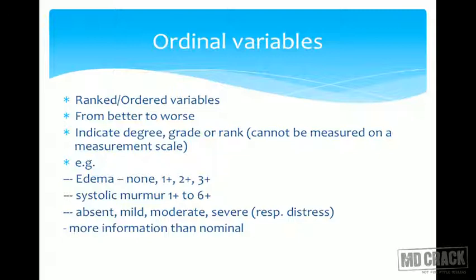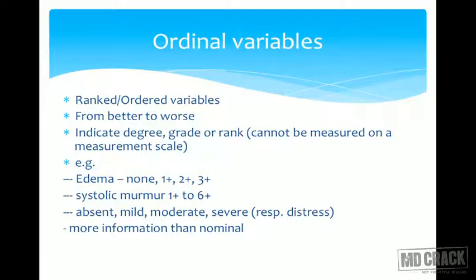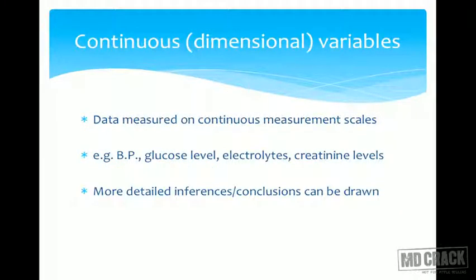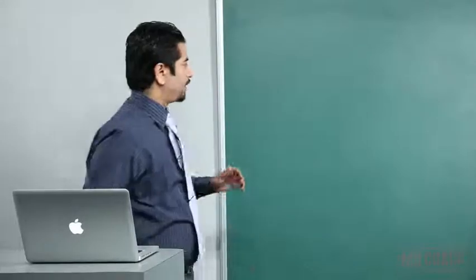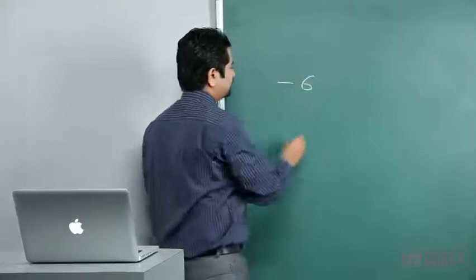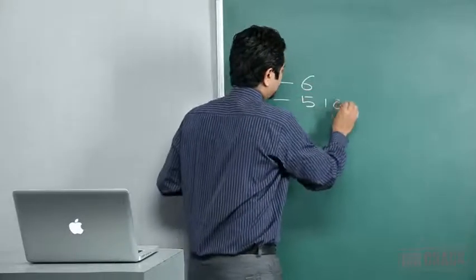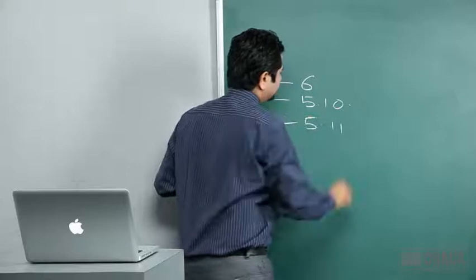Ordinal variables are ranked or ordered. For example, edema graded as none, 1+, 2+, 3+ — meaning edema is increasing. Systolic murmur is graded from grade one to grade six — that is an order. Continuous variables can have multiple values; for example, height can be six feet, five feet ten, five feet eleven, and infinitely many values in between.